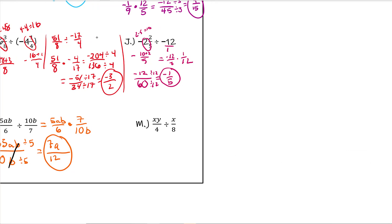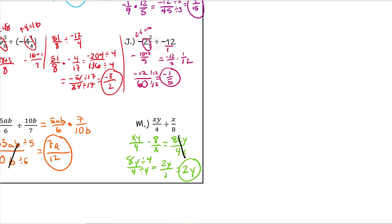For this last one: xy over 4 stays the same, and we flip x over 8 to get 8 over x. Give this one a try. If you stopped at 2y over 1, you're technically correct, but keep in mind that just like 8 over 1 is the same as 8, 2y over 1 is the same as 2y. If you stopped at 8y over 4, you still need to finish simplifying the 8 and the 4.